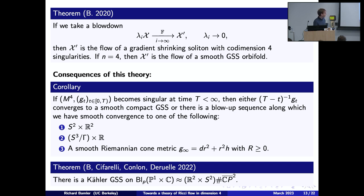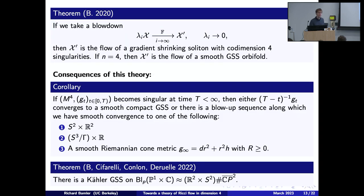Here is another application, joint work with Charlie Cifarelli, Ronan Conlon, and Alex Deruelle. We used this theory to show the existence of a Kähler gradient shrinking soliton on the blow-up of ℂP¹ × ℂ, a new four-dimensional gradient shrinking soliton. The last three authors had conjectured there might be one further soliton in the Kähler setting and found its nice properties, but existence remained open. We looked at one specific Ricci flow and used this blow-up theory to show there must be a blow-up that is a Kähler gradient shrinking soliton but cannot be any of the ones already known — so it must exist. It is a backwards way of using Ricci flow to understand singularity models.